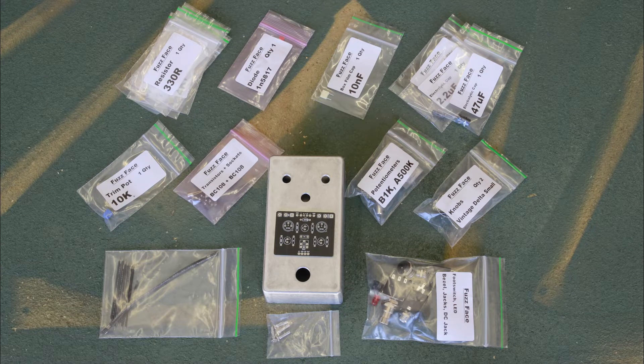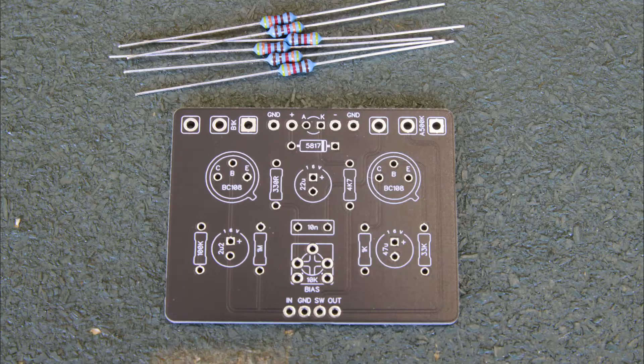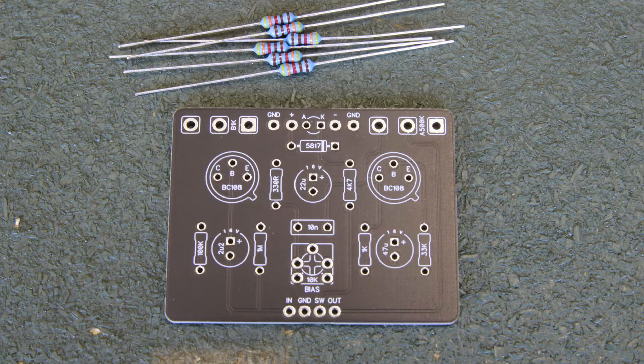Time to start soldering. We're going to build the pedal in order of component height, so we will start with resistors. Resistors look like this, and will go into their corresponding spots circled here.